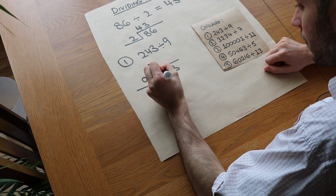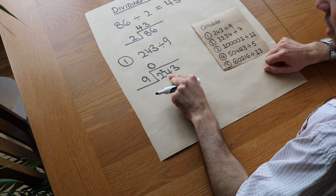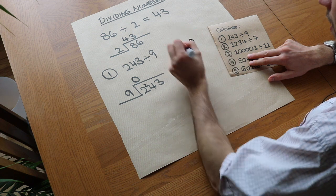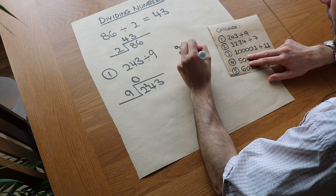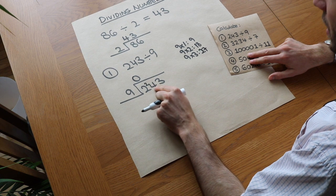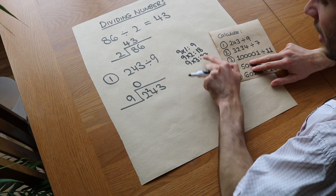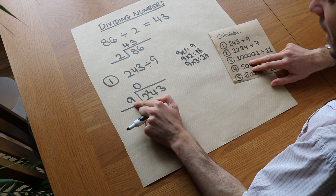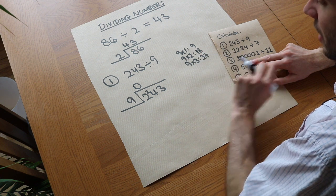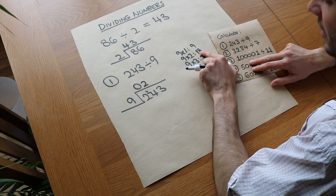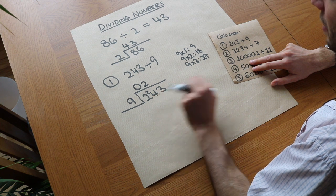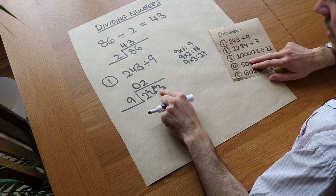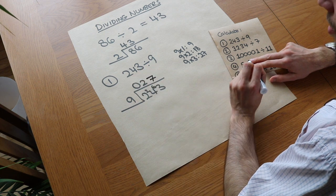We put that remainder on the top left of the next number, so now we ask: how many times does 9 go into 24? The multiples of 9: 9×1=9, 9×2=18, 9×3=27. So 9 goes into 24 twice — 2 lots of 9 is 18 — but not 3 times because 27 overshoots. So we put 2, with a remainder of 6 (since 24 minus 18 is 6). We put the remainder of 6 on the next digit. Then how many times does 9 go into 63? It goes in 7 whole times. So we get an answer of 27.